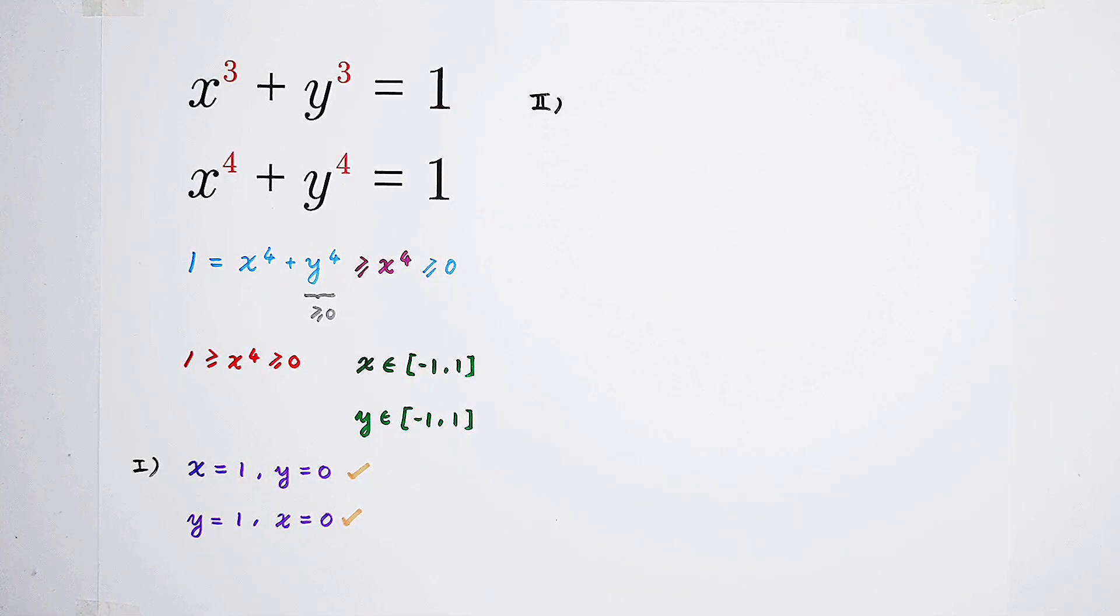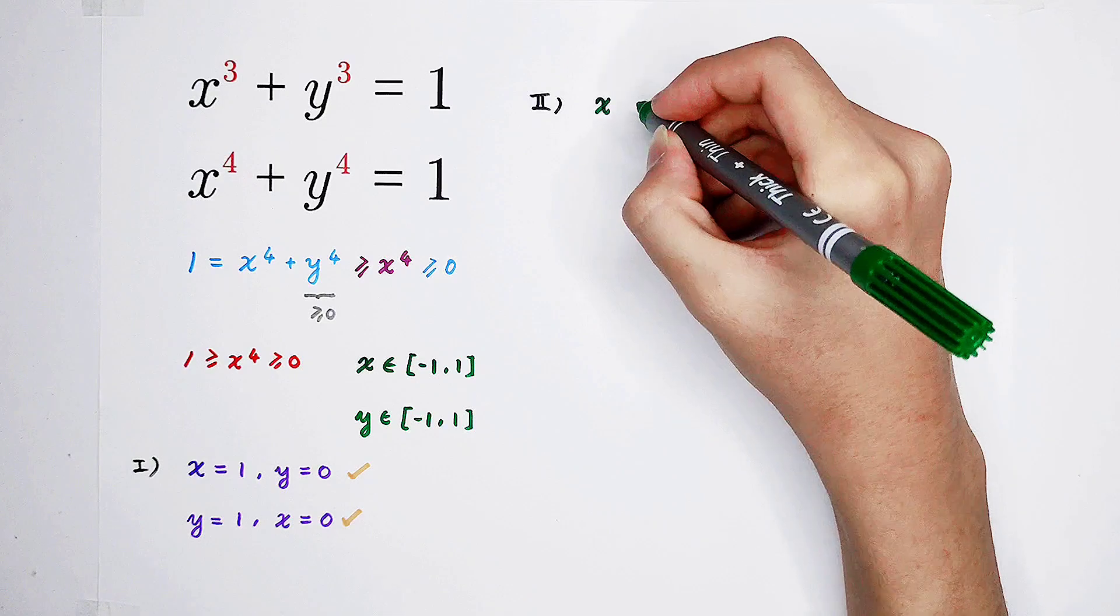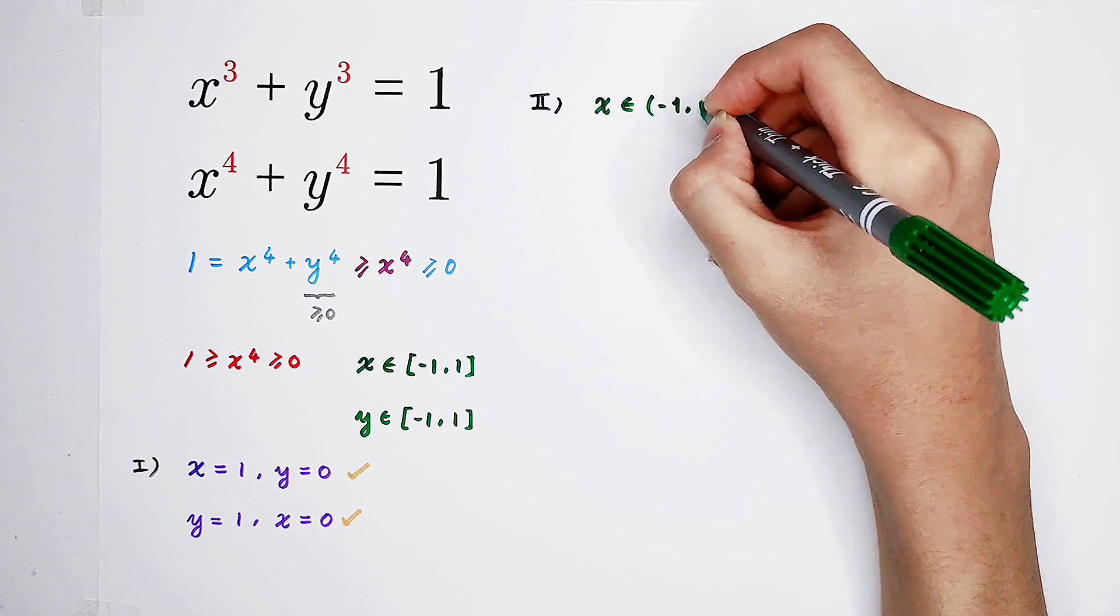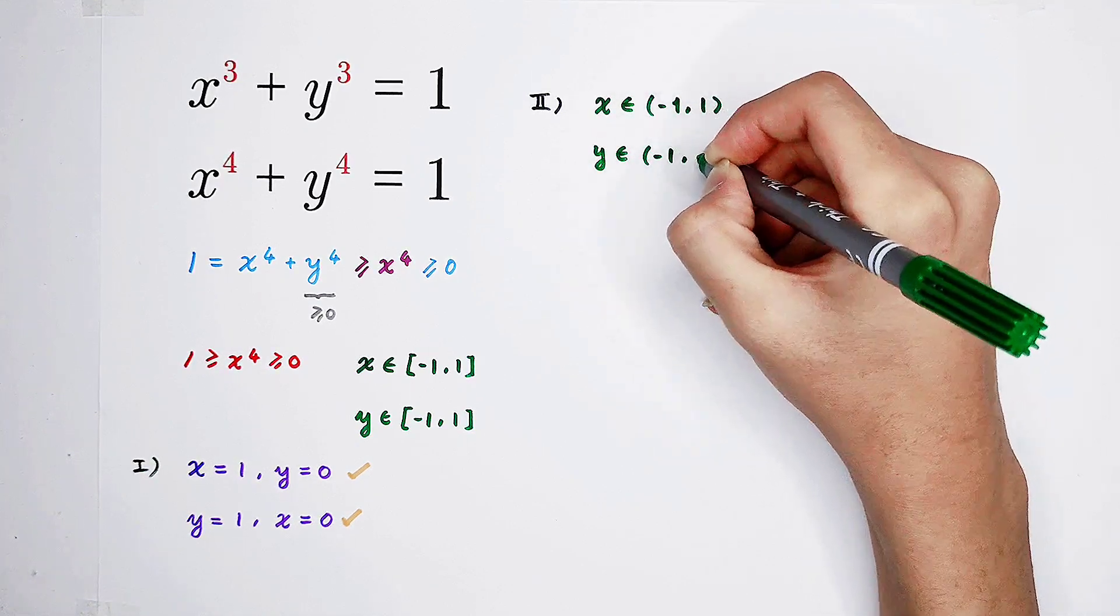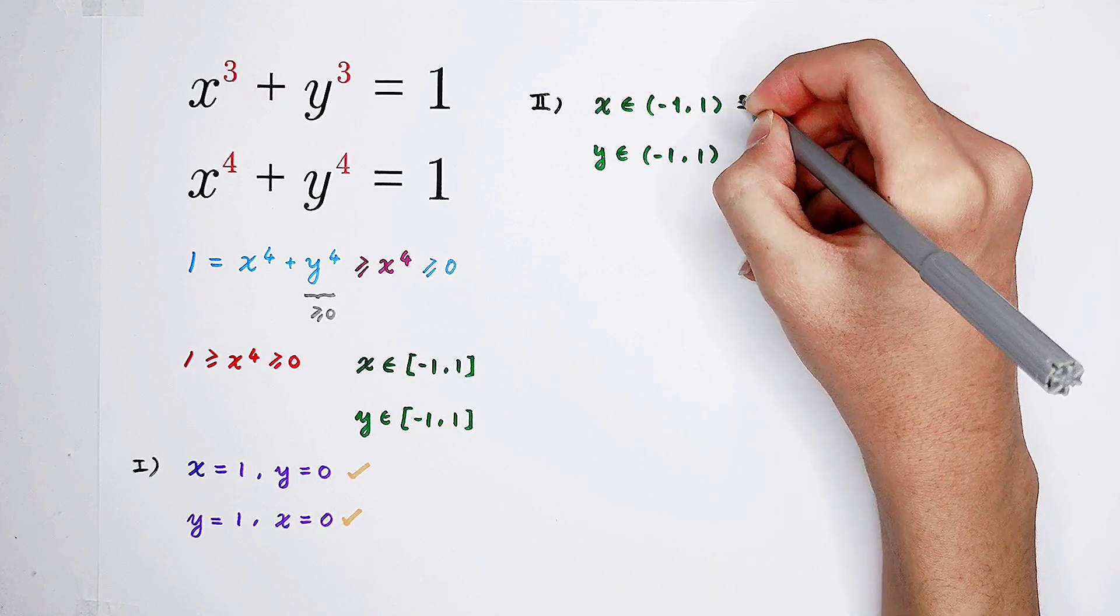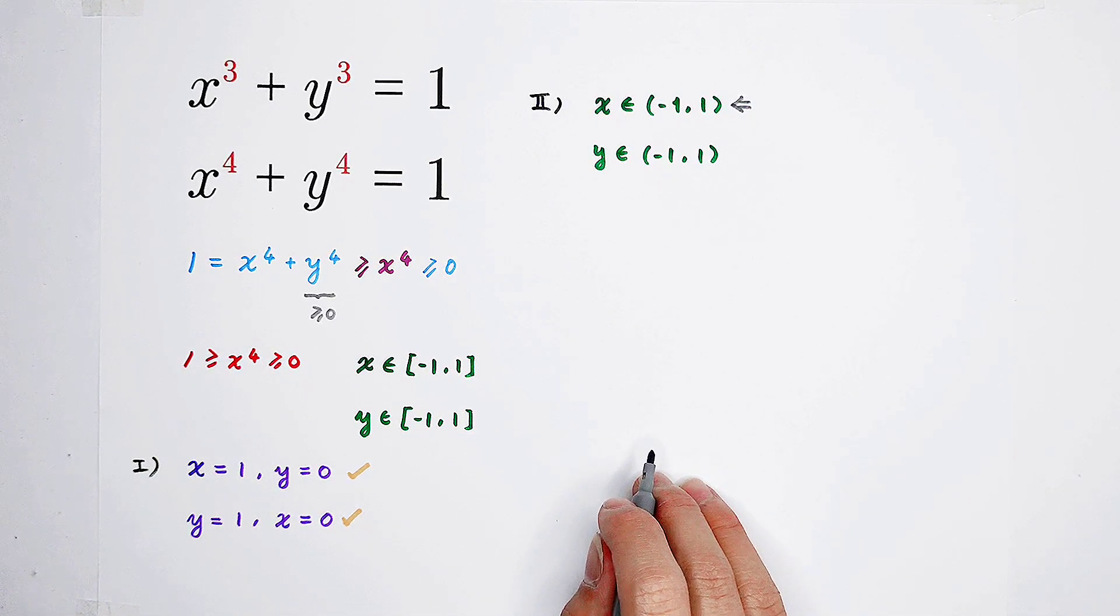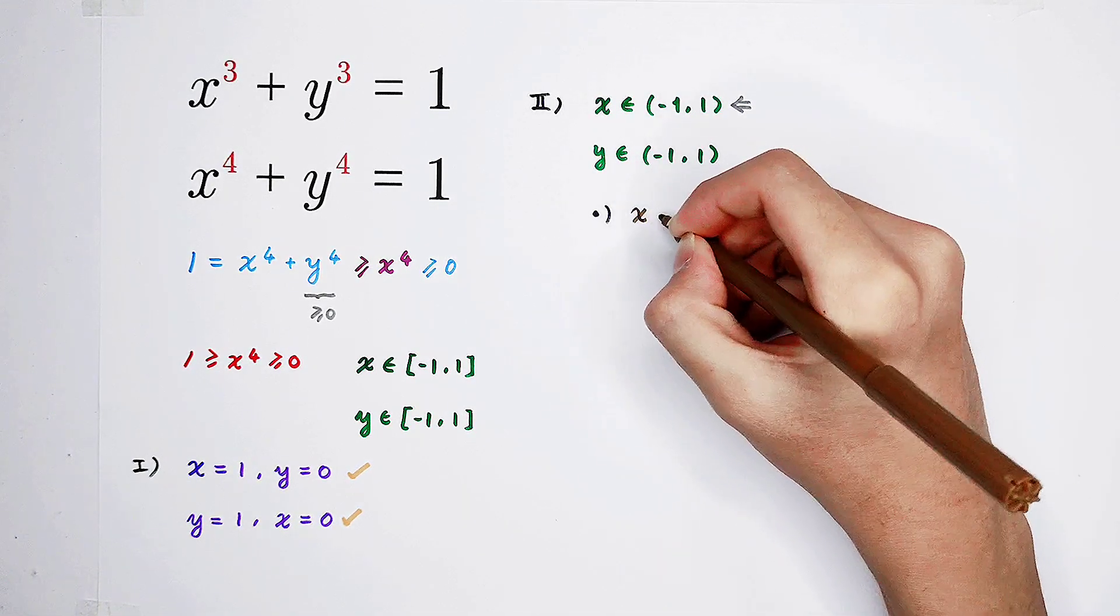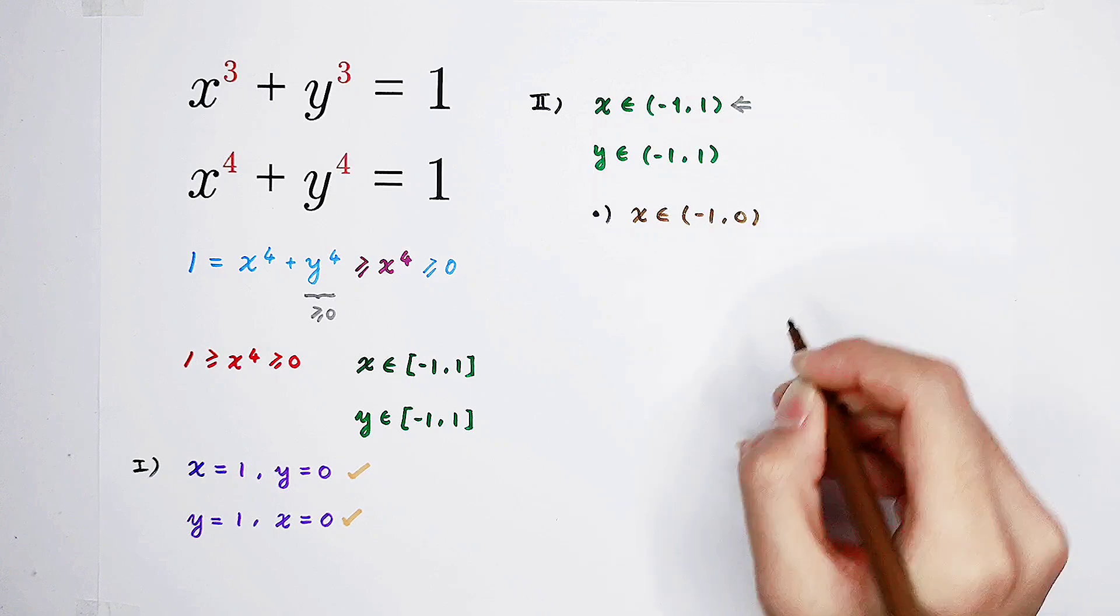Now, turn to our second case. We've inspected the borders. So now, in our second case, the interval of x should be an open interval from negative 1 to 1, for y as well. An open interval from negative 1 to 1. Now, I'm going to focus on x and separate this case into two smaller cases.